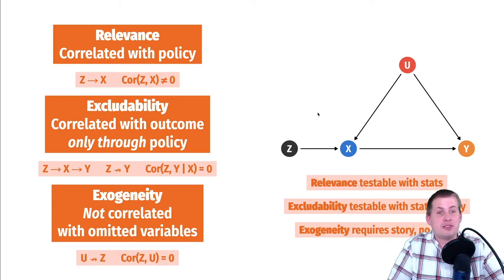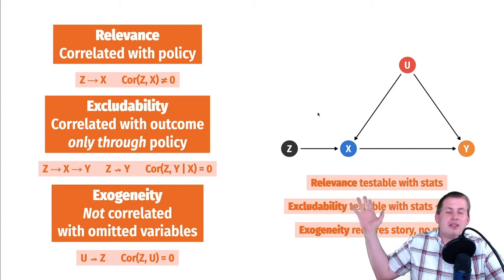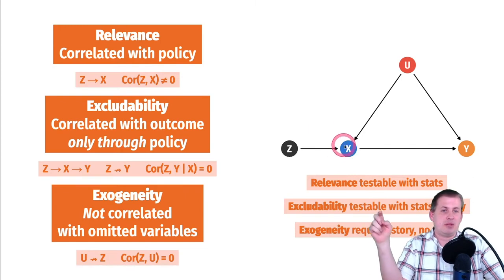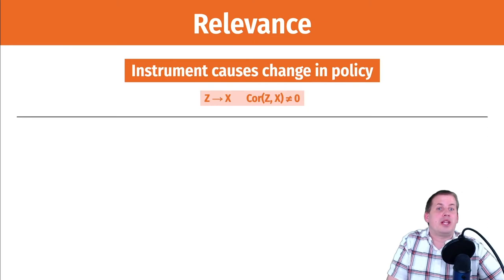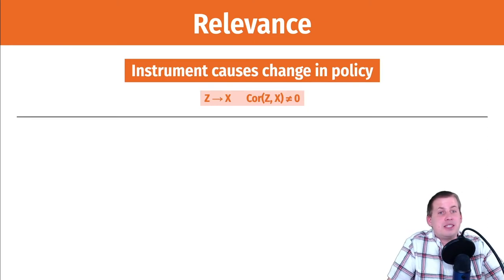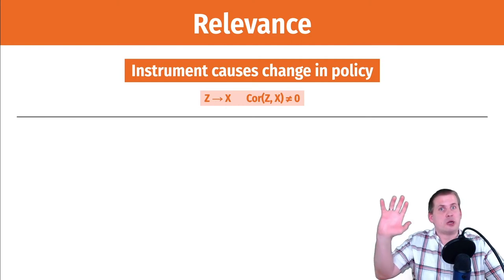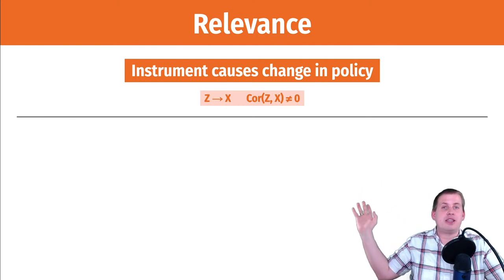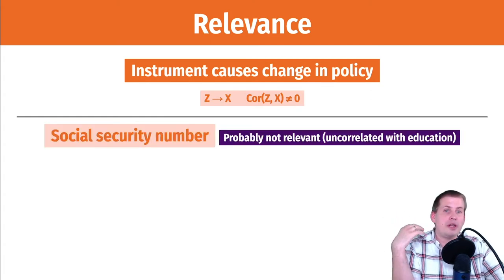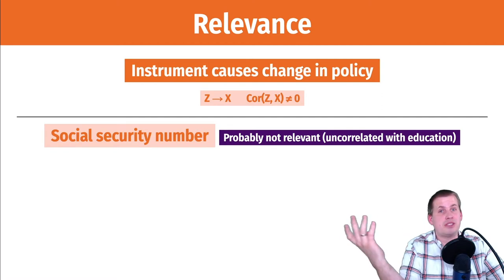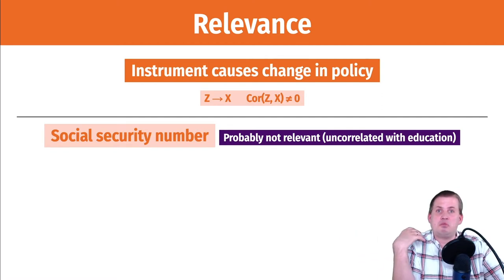This makes it hard to use instruments because it can fall apart at any one of these stages — through relevance, excludability, or exogeneity. Let's look at some practical examples of possible instruments to explain the relationship between education and earnings. Starting with relevance — the idea that the instrument causes a change in policy, or that our proposed outside thing causes more education, and there's some sort of relationship there.